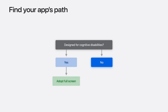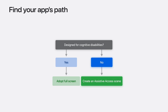If your app isn't designed for cognitive disabilities, get started with support in iOS and iPadOS 26 to create an assistive access scene. With this scene type, you'll provide a tailored experience where controls are automatically displayed in the familiar and prominent style of built-in apps like camera and messages. This differs from full screen support, where your app is unchanged aside from the screen dimensions. If you're unsure which path to take, opt for the scene to take advantage of all that iOS and iPadOS 26 have to offer for assistive access.